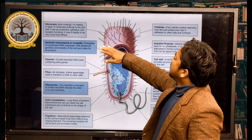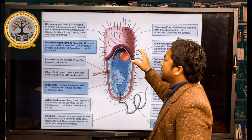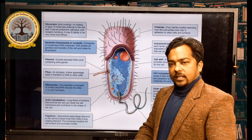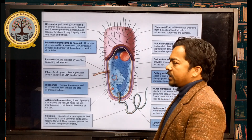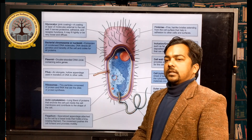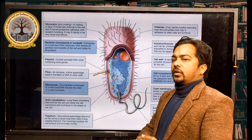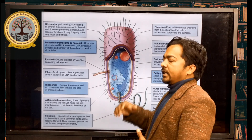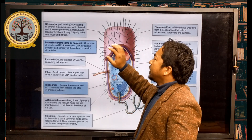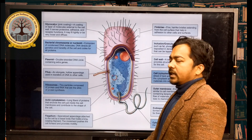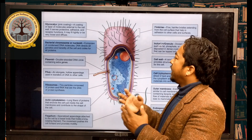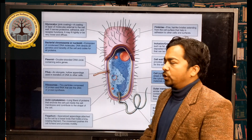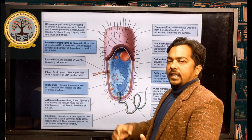First of all, we discuss about glycocalyx. Glycocalyx is the pink coating. It is the external part of bacteria, of prokaryotic cells, which works as an adhesive. Any bacteria that want to adhere to the surface of a host cell for disease and survival — this coating is known as glycocalyx. It gives adhesive nature to attach to the host, and receptor function. It may be tightly bound, loose, or diffuse.